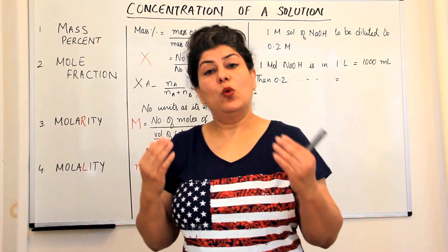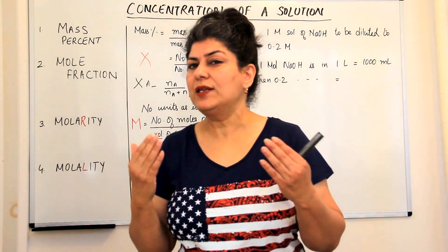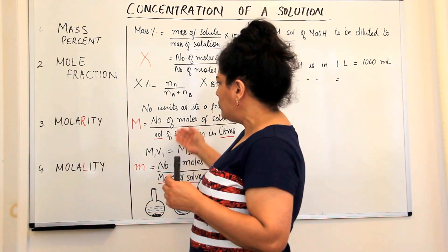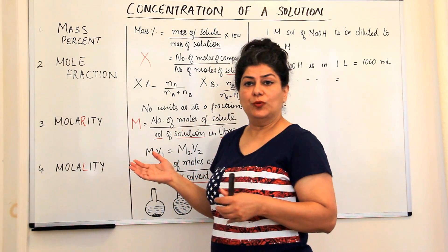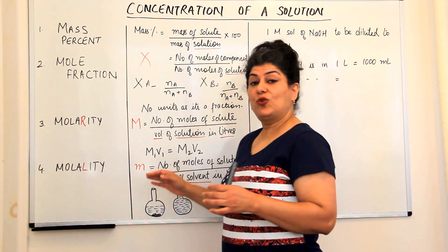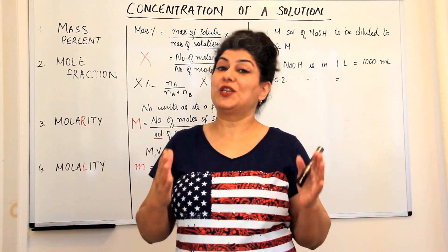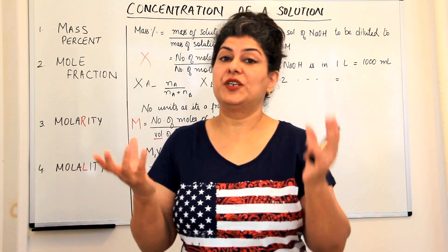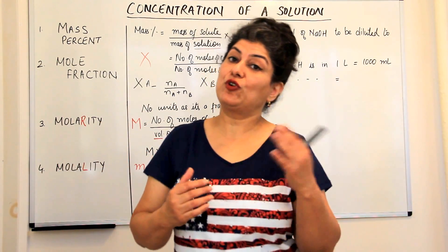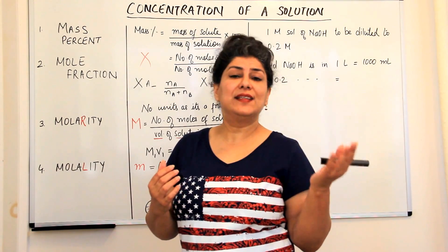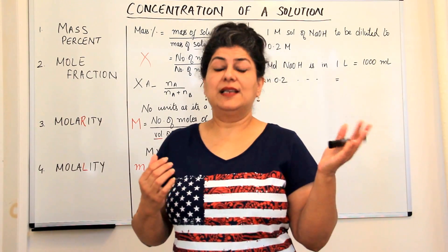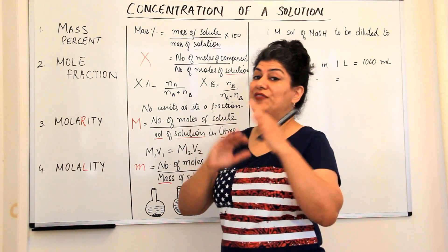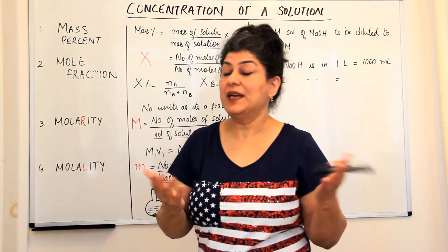Now, one liter of solution versus one kilogram of the solvent — if you think about water, one liter of water is almost one kilogram. So it might feel there would be no difference between the two, but this is only true when the solvent is water. If your solvent is different — for example, ethanol or glycerin — then the difference between these two becomes very apparent.